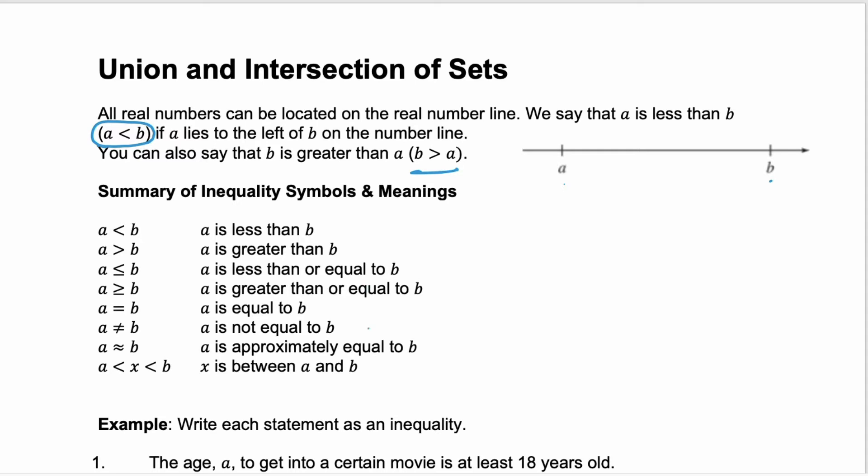Below you have a summary of inequality symbols and their meanings. Notice that we also have a equals b, a is not equal to b, and a is approximately equal to b, as well as this compound inequality which puts x between two numbers a and b.